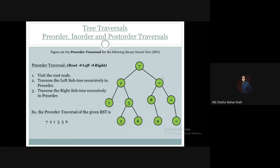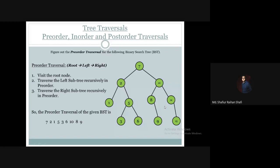Now we will traverse the right subtree of root 7. The right subtree's root is 10, so we visit 10 and print the value. Then we traverse 10's left subtree — root 8, so we visit 8 and print it. Then 8's left subtree has root 9, so we visit 9 and print it.